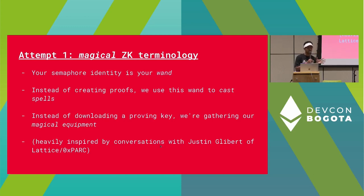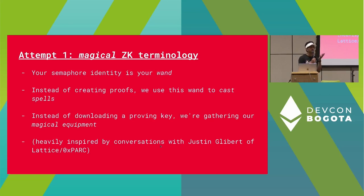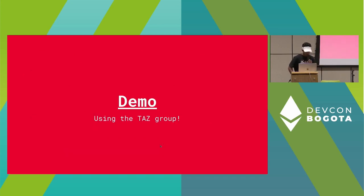So instead of a symbol for identity, this is your wand. With your wand, you cast spells. And instead of downloading a proving key, you use magical equipment to make all this work.